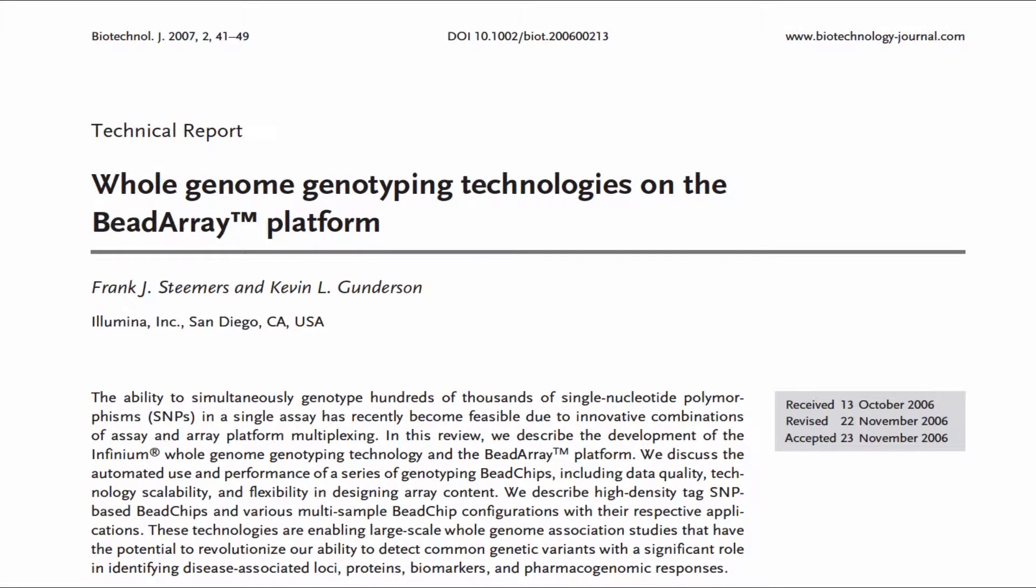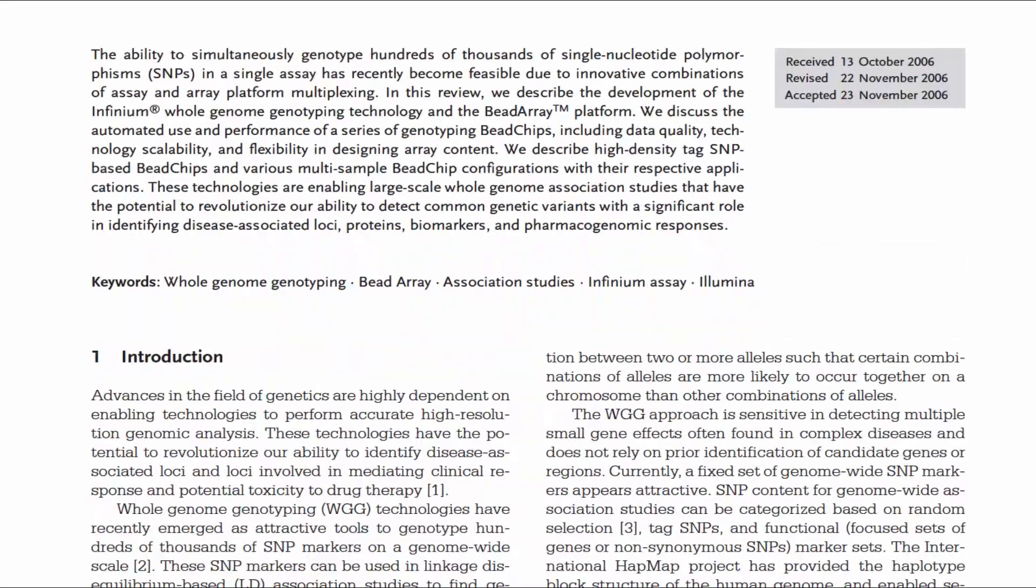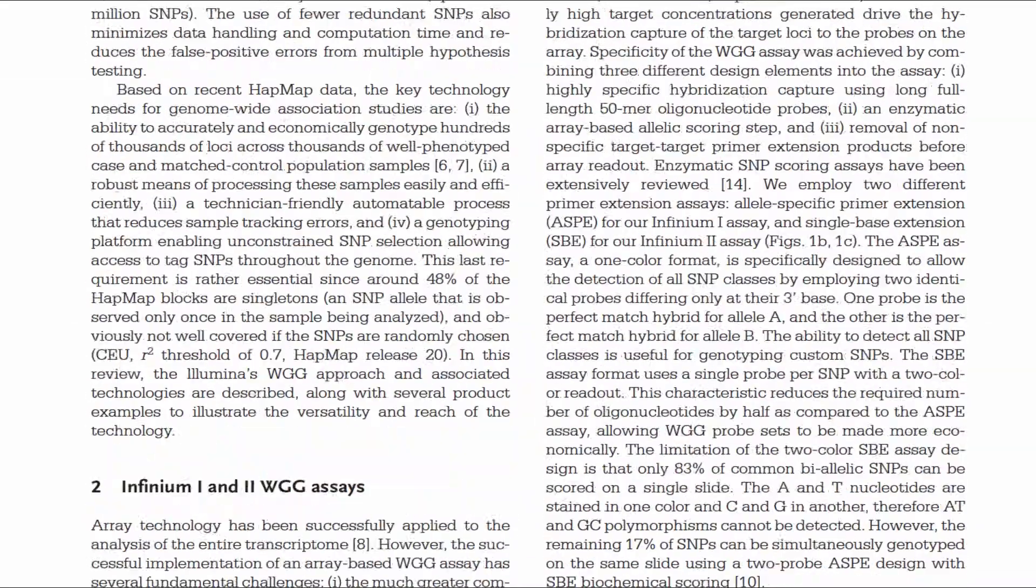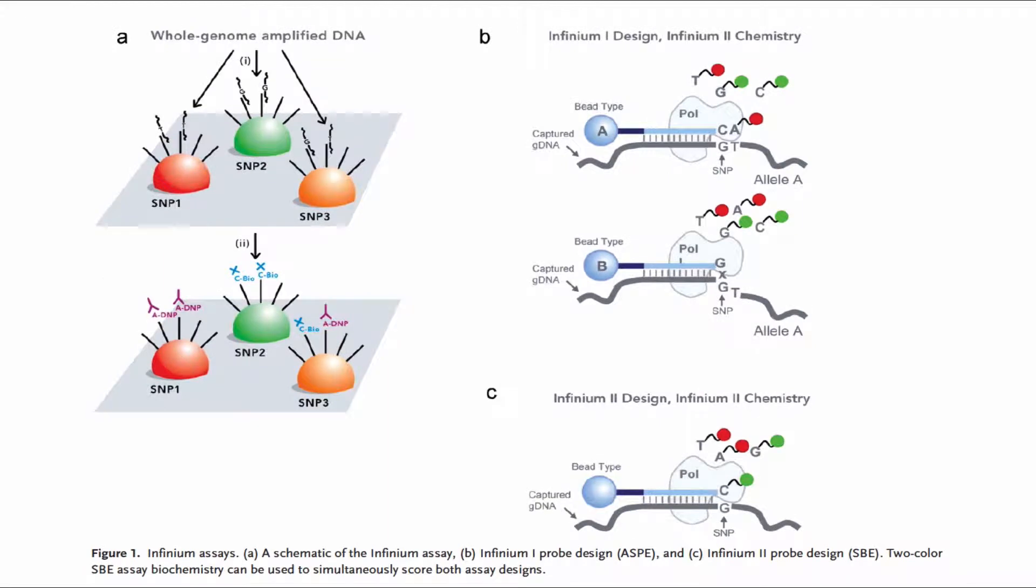It's a little bit older, but here's a really good review article published in 2007 from the Illumina Group on the whole genome genotyping technologies that they use on their beta-ray platform. Let's take a look through this article and stop at Figure 1. Figure 1 is worth spending some time studying in detail.